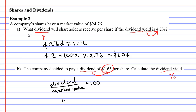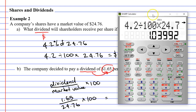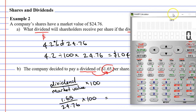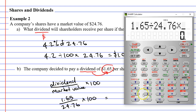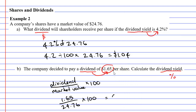Our dividend is $1.65, our market value is $24.76, and we multiply this by 100. So: 1.65 divide 24.76 times 100. We'll round it to two decimal places, and we get 6.66%.